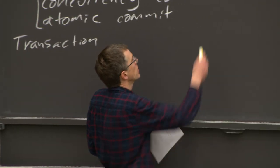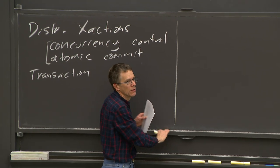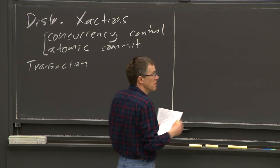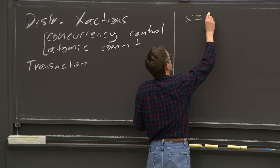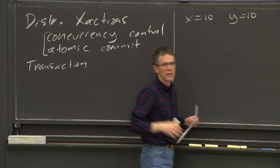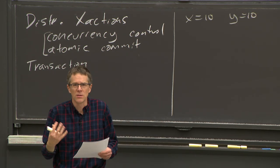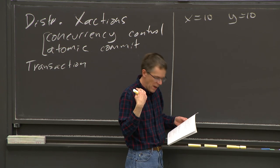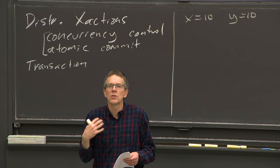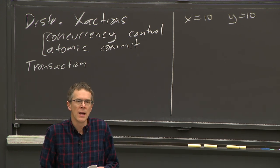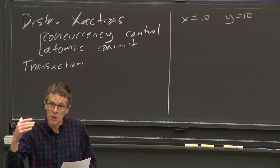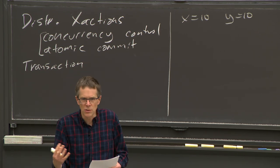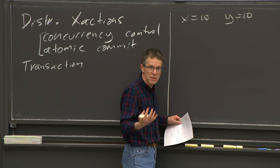For example, suppose we're running a bank and want to transfer from account x to account y, both starting with a balance of 10. We imagine two transactions running at the same time: T1 transfers a dollar from x to y, and T2 is an audit that checks all accounts to make sure the total amount of money in the bank never changes — because even after transfers, the total shouldn't change.